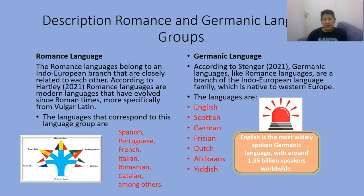The Germanic languages are English, Scottish, German, Frisian, Dutch, Afrikaans, and Yiddish. Very importantly, English is the most widely spoken Germanic language.